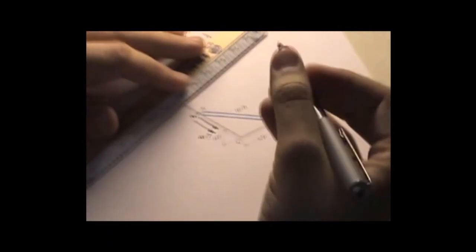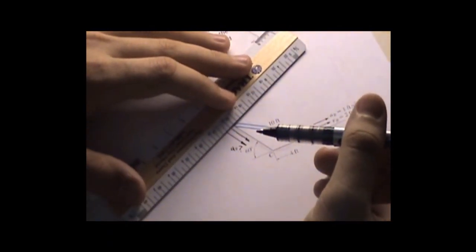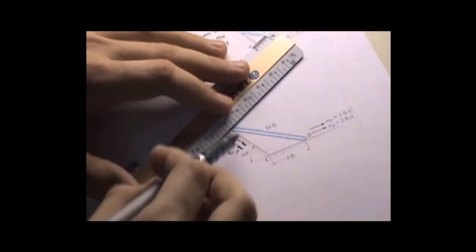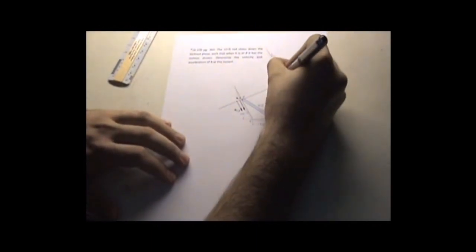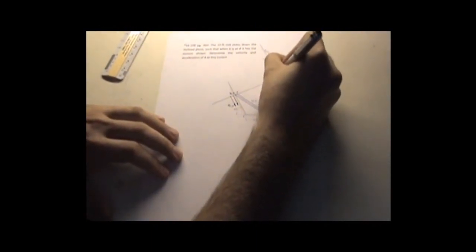The way you do this, draw a line perpendicular to the motion of point A. Same thing for point B. You see that when these connect, they form your IC.